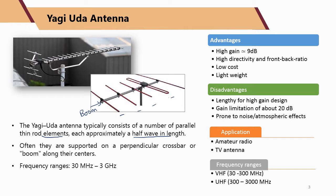The advantages of the Yagi-Uda antenna include high gain, high directivity, and high front-to-back ratio. It is also low cost and lightweight. The disadvantages are that it is lengthy, especially for high-gain designs, and it has a gain limitation of about 20 dB maximum.